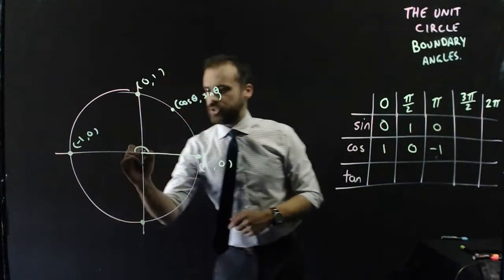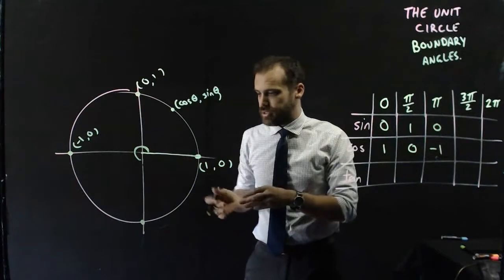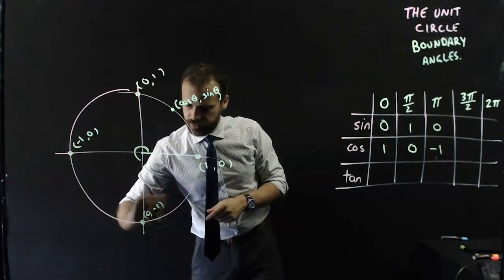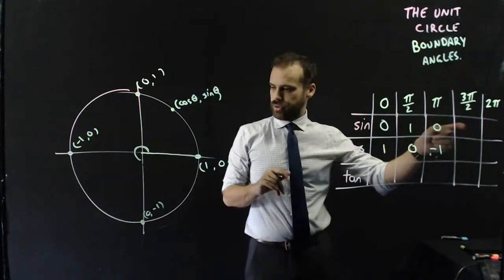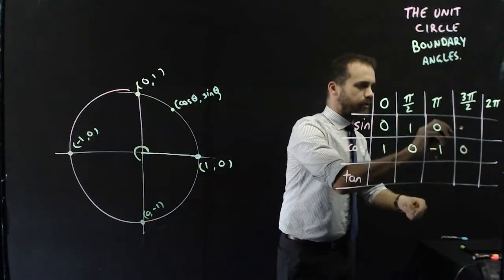Over here, which is angle 3 pi on 2 now, 270 degrees, we have 0, negative 1.